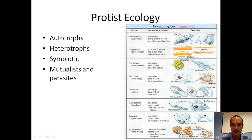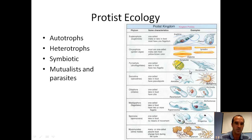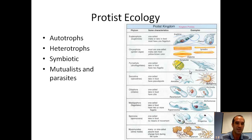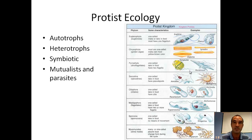A diagram shows a bunch of different types of protists and their lifestyles and the way they live in their environment. They can be autotrophs, they can be heterotrophs, they can form symbiotic relationships, and they can also be mutualists and parasites — all different kinds of living styles.